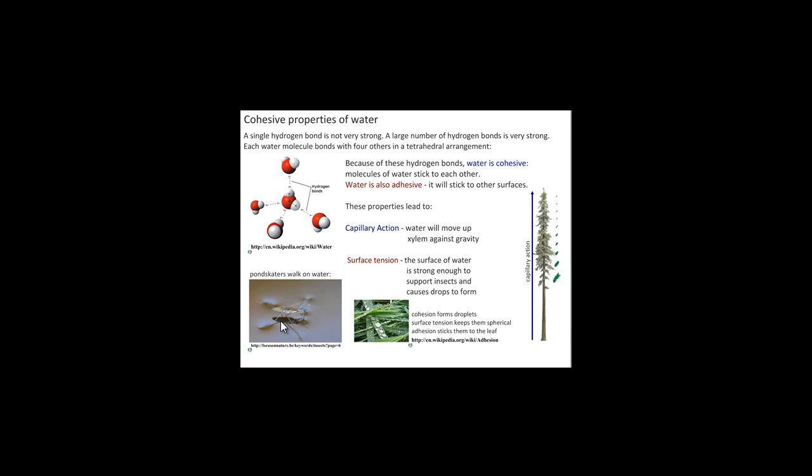It produces a surface film on the water, and that allows insects and other small organisms to actually walk on the surface of the water. Cohesion also forms water droplets on the surface of leaves as well.